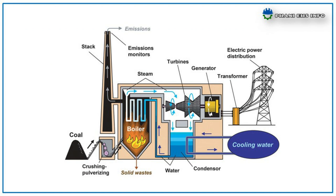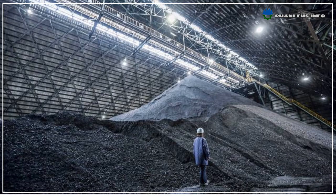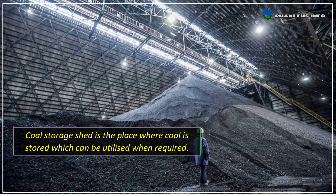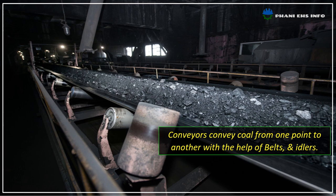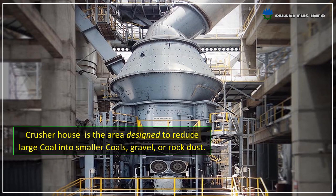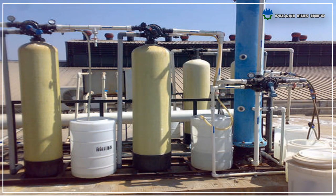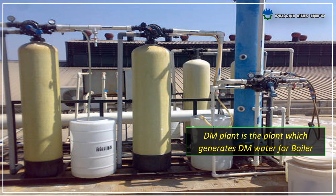Let us see the important components of a power plant and their purpose. There are so many components present in the power plant which perform their specialized function for efficient working. The various components of the steam power plant are: coal storage — the place where the coal is stored which can be utilized when required. Conveyors convey coal from one point to another point with the help of belts and idlers. Crusher house — a crusher is a machine designed to reduce large coal into smaller coal, gravel or rock dust. DM plant — a plant which generates DM water for the boiler.